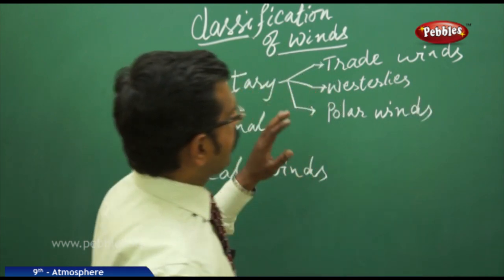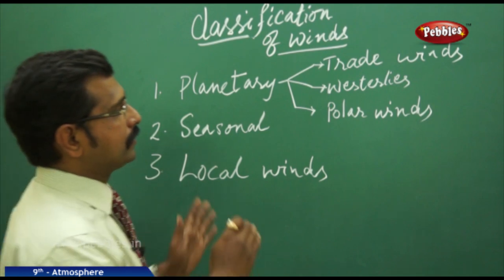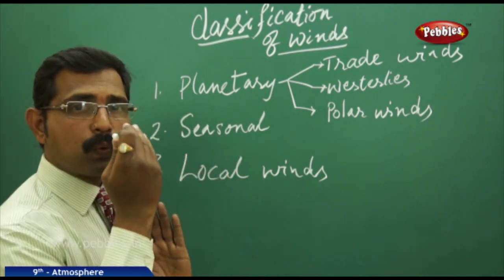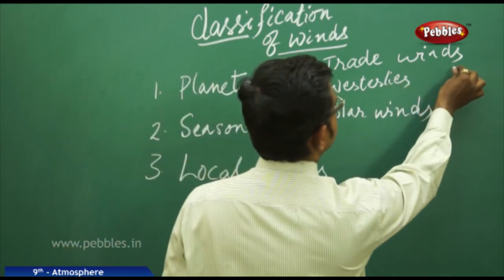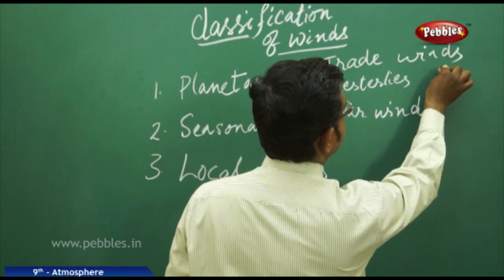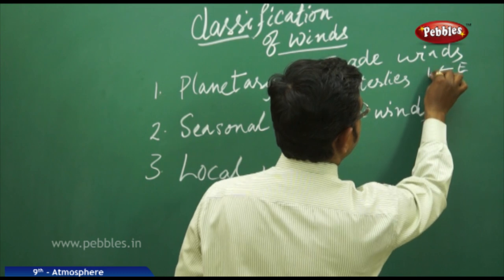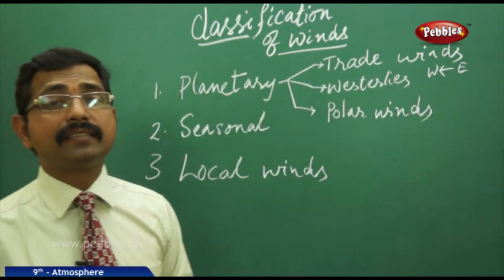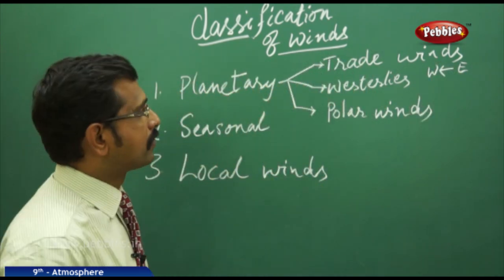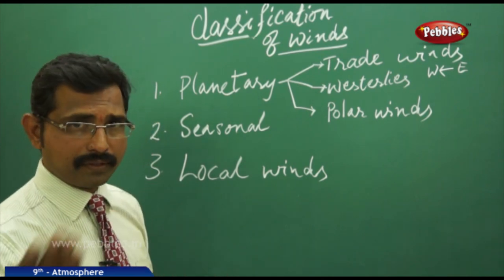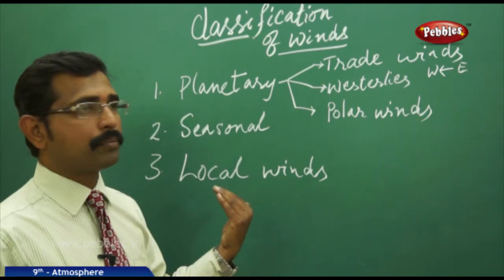The main characteristic of trade winds is they move from east to west, from the eastern direction to the western direction, also called easterlies, traveling from the eastern part of the world to the western part of the world.